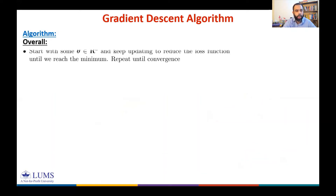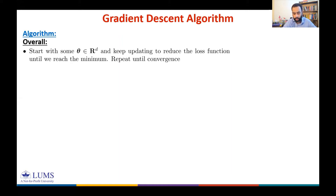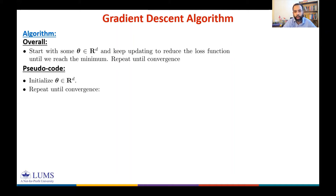The overall algorithm is: start with some initial θ and keep updating in such a way that the loss function is reduced in each iteration until we reach a minimum. In pseudo-code: initialize θ ∈ ℝᵈ, then repeat until convergence is obtained.